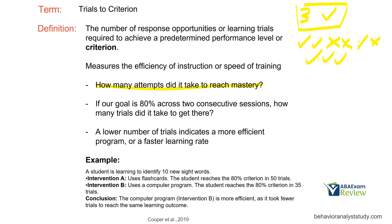If I'm trying to get three checks in a row and I am at 150 trials, let's try something different, because we are not being efficient at all. A lower number of trials indicates a more efficient program or a faster learning rate. The goal isn't just to go as quick as possible — we still want to be effective, but we've got to find a balance between effective and efficient. We can't just spin our wheels on the same thing; we've got to always be evaluating whether we could be doing any better.